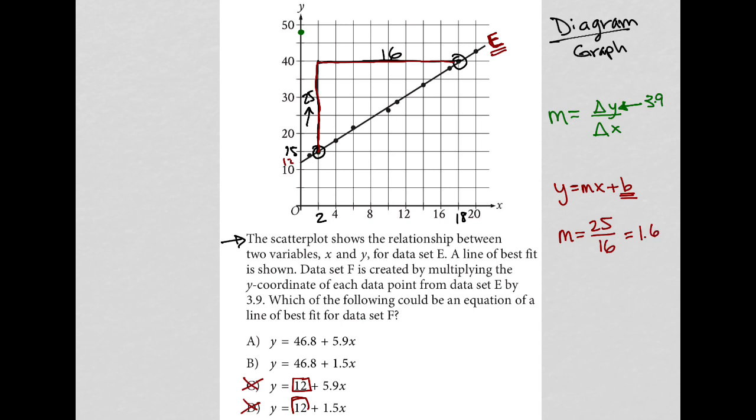And for choice B, I still have, or have something close enough, 1.5 as my slope here. But I know that this number on top is going to change, because I know that my change in Y is going to be impacted by a factor of 3.9. So B has to be gone. There's no chance that the slope is the same. It has to be larger. So choice A has to be the correct answer here.